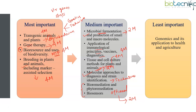The least important part is genomics. Till now, CSIR has not touched the bioinformatics part, which is why it is kept under the least important topics.